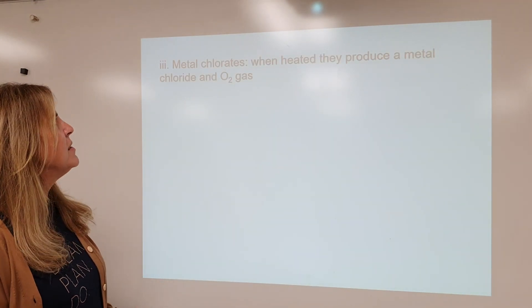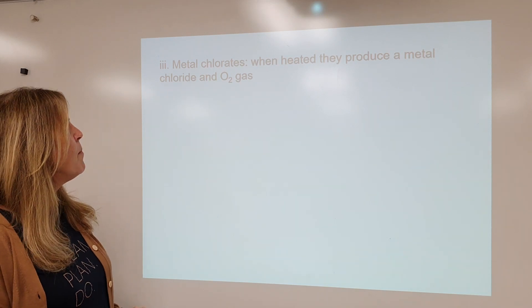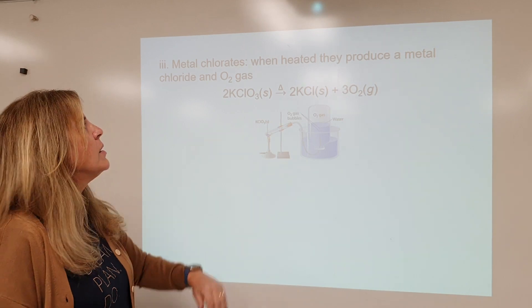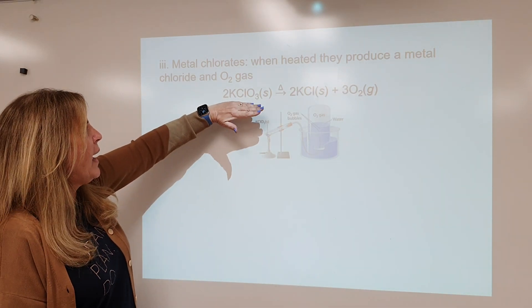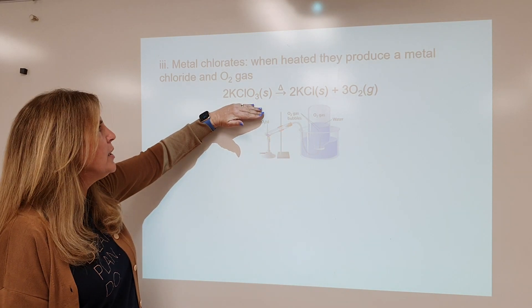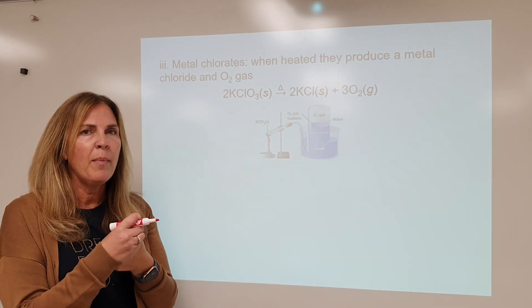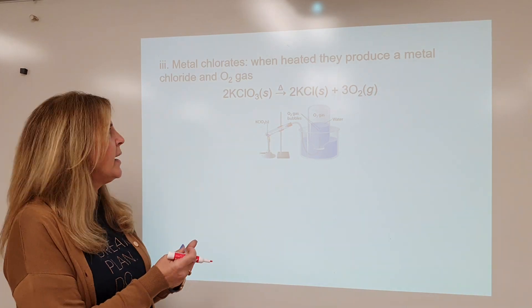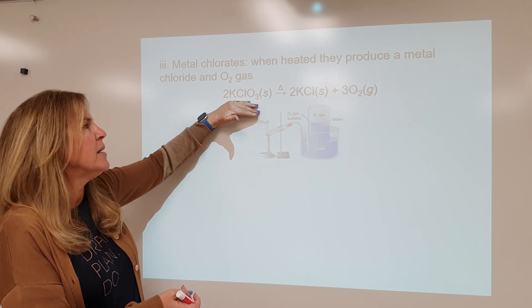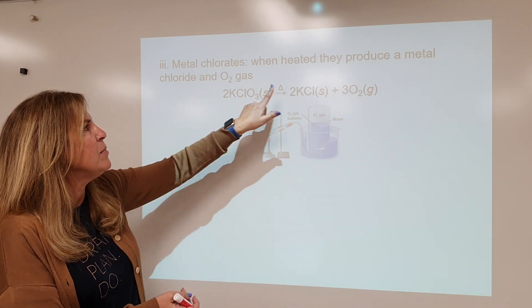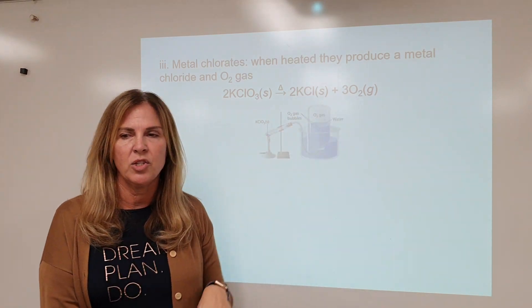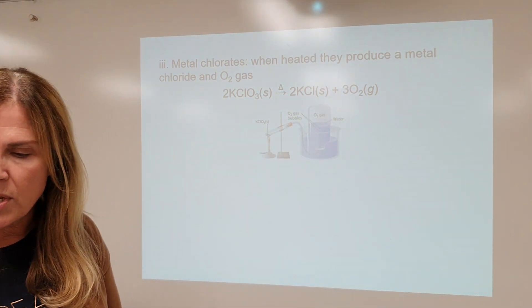Metal chlorates: when heated, they produce a metal chloride and oxygen gas. I look at my single reactant — not a metal carbonate, not a metal hydroxide, but yes, a metal chlorate. So potassium goes with chloride, making potassium chloride, and my other product is oxygen gas. Then balance it.